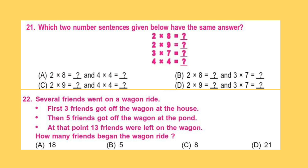Question 21. Which two number sentences given below have the same answer? 2 into 8 is equal to and 4 into 8.